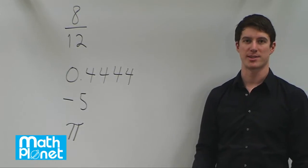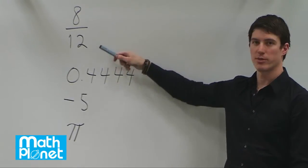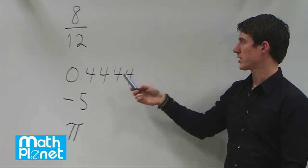If they're rational, we can write them as a simple fraction. So 8 divided by 12 is already a simple fraction. 8 twelfths is a rational number.